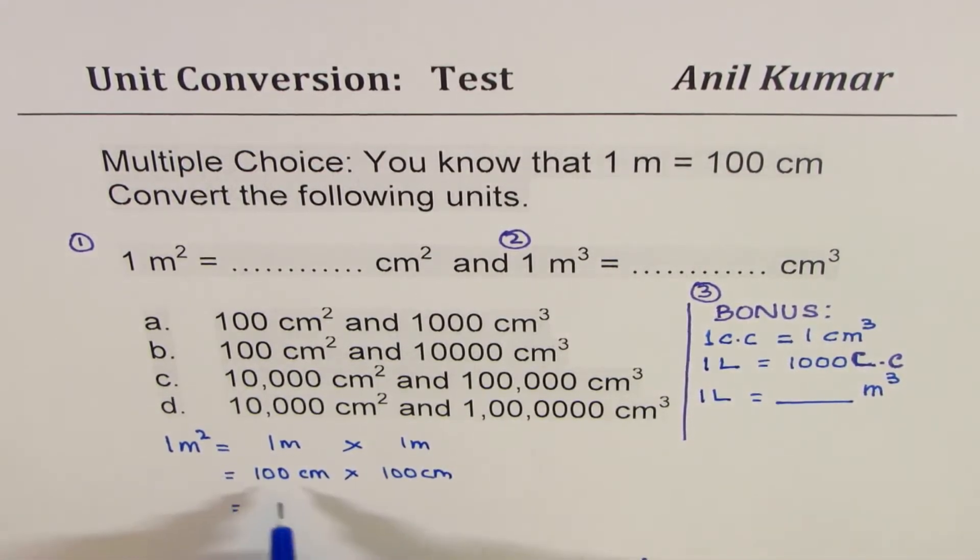And clearly, what do I get? I get a number which is 10,000, means four zeros. Two zeros from this and two from that. So we get 10,000 centimeters square.